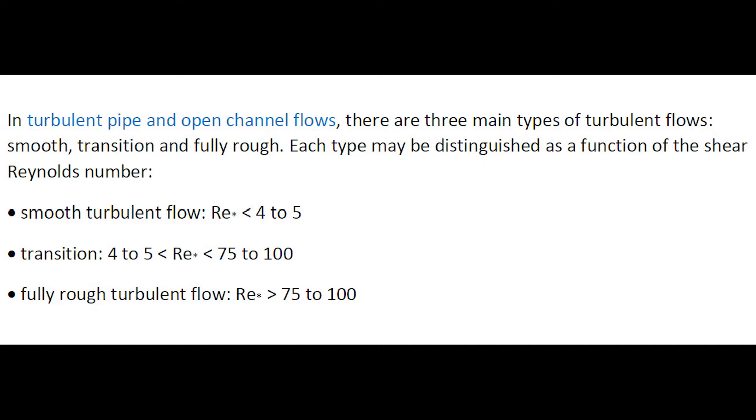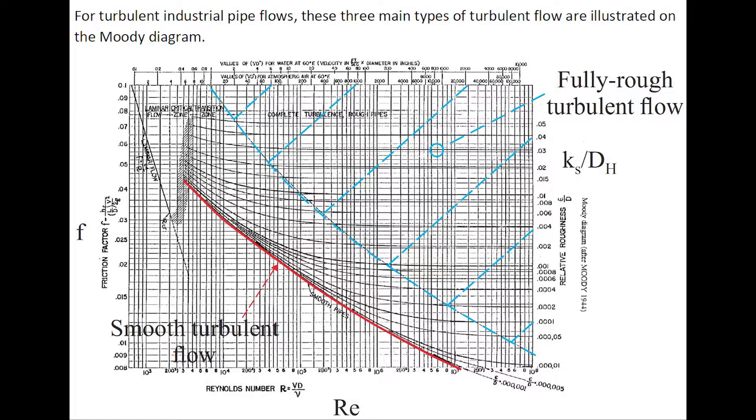transition for a shear Reynolds number between 5 to 100; and fully rough turbulent flow for a shear Reynolds number greater than 75 to 100.